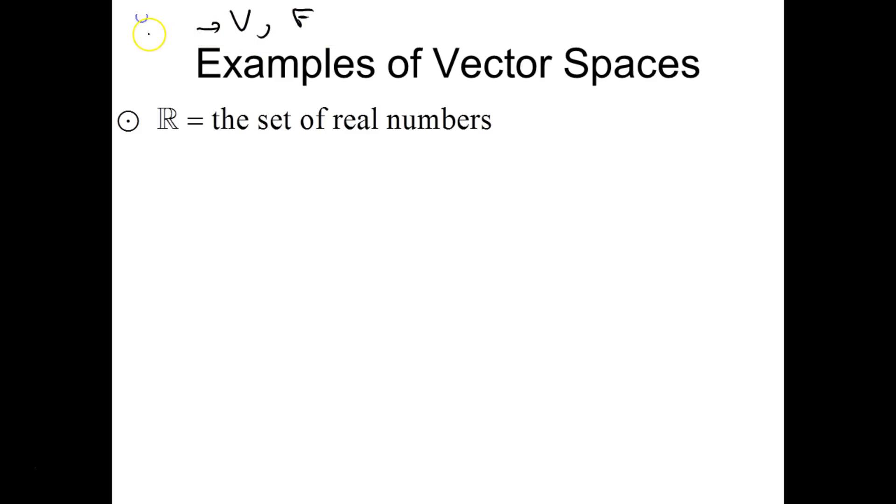So V is the set of vectors, and F is the set of scalars. The scalars come in when there's scalar multiplication. The vectors are throughout, so when we say vector spaces, we really are talking about V. And most times, the set of scalars is just the real numbers already. So when I say the set of real numbers, I mean V being the set of real numbers. The vectors are real numbers.